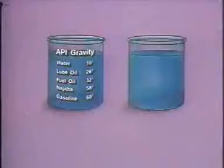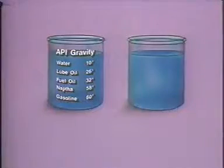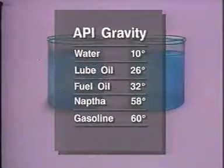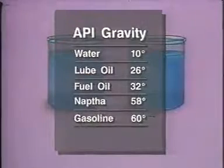Many products must meet certain weight specifications. The lightness or heaviness of petroleum products is usually measured by comparing their weight to the weight of an equal volume of water. Two different scales are used to do this. The API gravity scale uses a reference in which 10 degrees API gravity is the same weight as water. On this scale, the lighter the product, the higher its API gravity. So relatively light products like gasoline and naphtha have a higher API gravity reading than heavy products like lube oil and fuel oil.